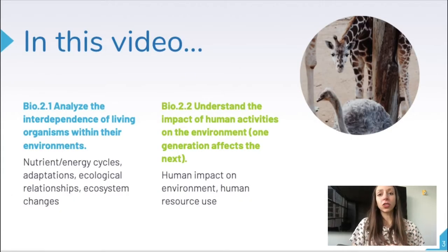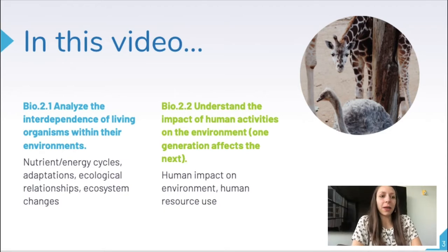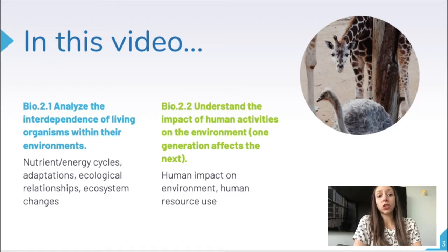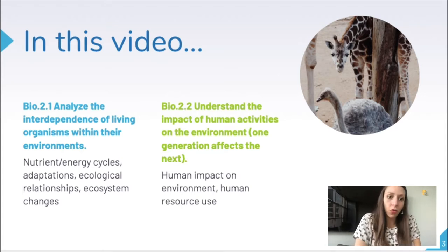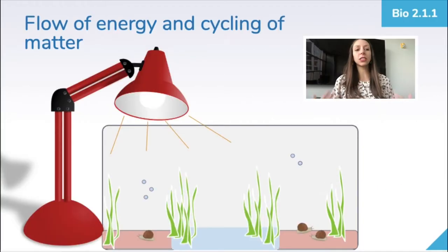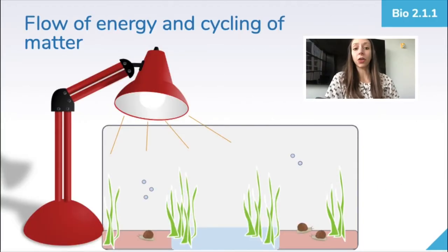We'll cover essential standards 2.1 and 2.2, as well as their objectives which include topics like nutrient and energy cycles, adaptations, ecological relationships, and ecosystem changes, as well as human impact on the environment and human resource use. But keep in mind this video is meant as review, so we don't have time to touch on everything, just the simplified essentials. We'll get a deeper look at photosynthesis and cellular respiration in later review videos.